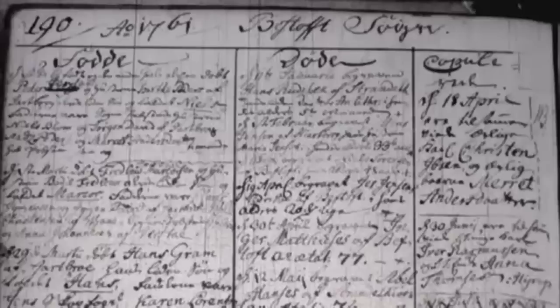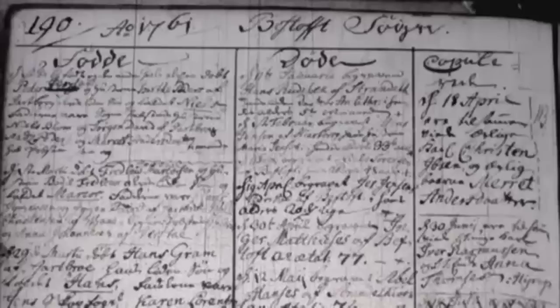FamilySearch is making its vast collection of genealogical records available online. Billions of images currently stored on microfilm at the Granite Mountain Records Vault are being converted to digital images, a process that will take years to complete.